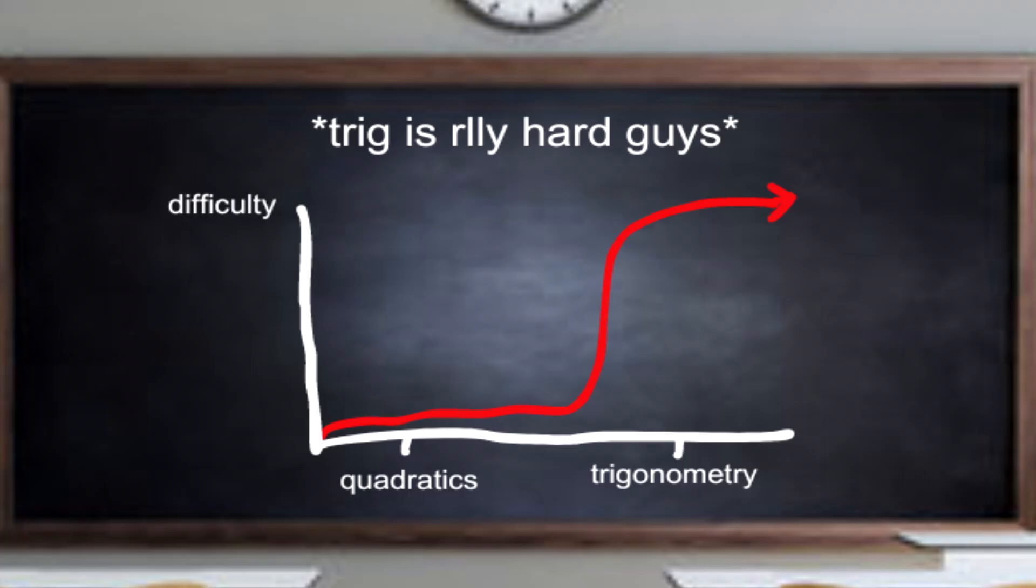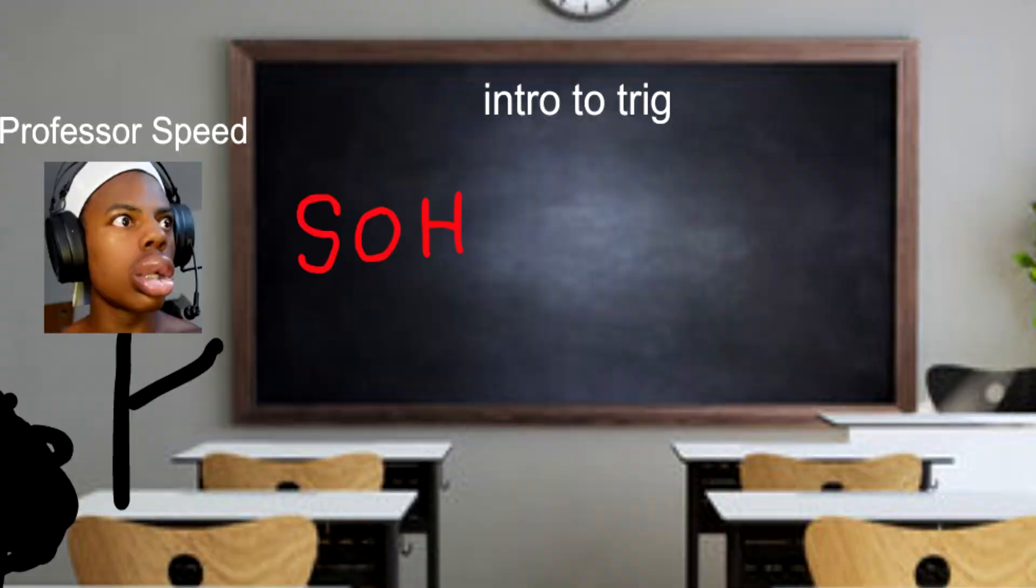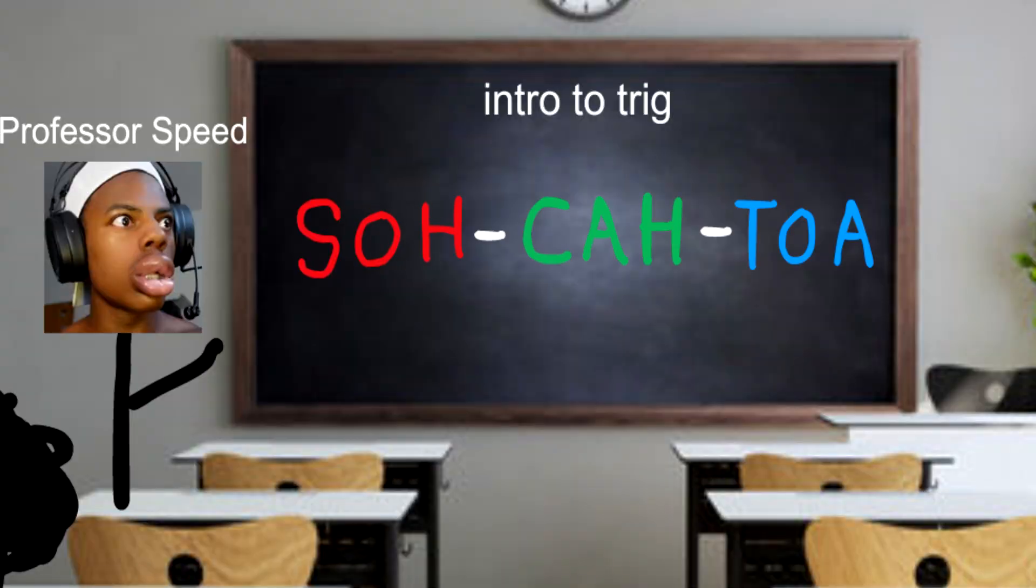Trig is one of the hardest concepts to grasp in high school, and you start off with a simple acronym, SOH CAHTOA, or sine, cosine, and tangent respectively.